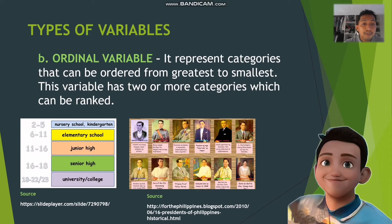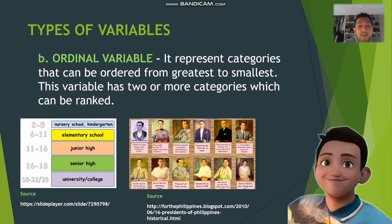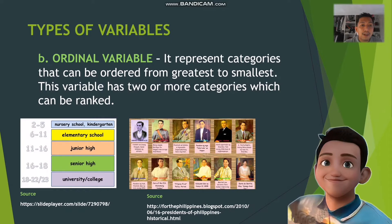Ordinal variables represent categories that can be ordered from greatest to smallest or vice versa. These variables have two or more categories which can be ranked. For example, educational level — nursery school, kindergarten, elementary school, junior high school, senior high school, and university or college. Another example is the presidents of the Philippines, starting with Andres Bonifacio, Emilio Aguinaldo, Manuel Rojas, and so on.